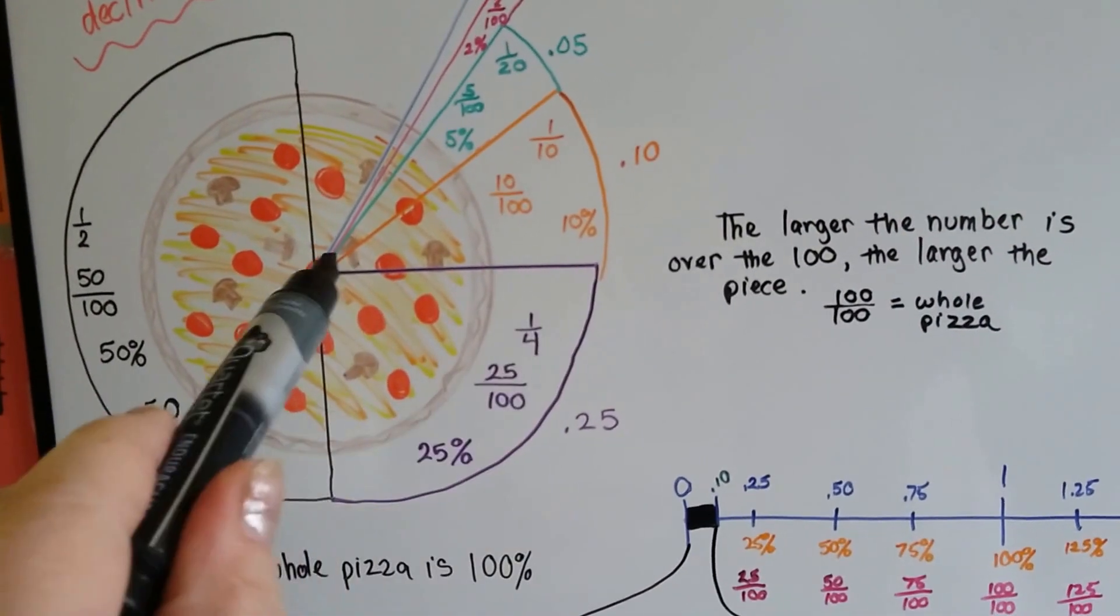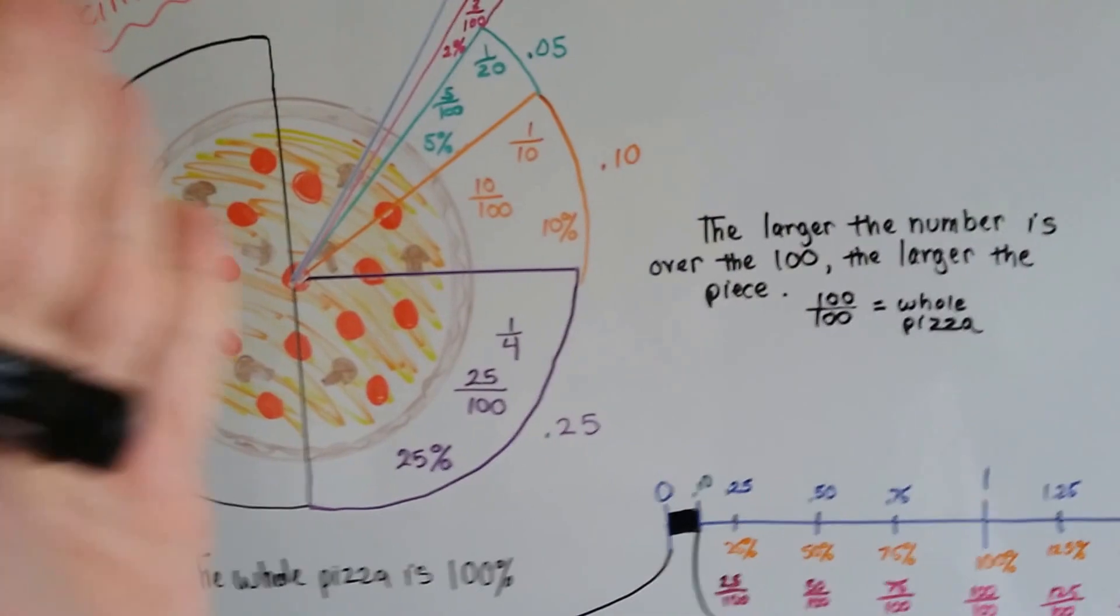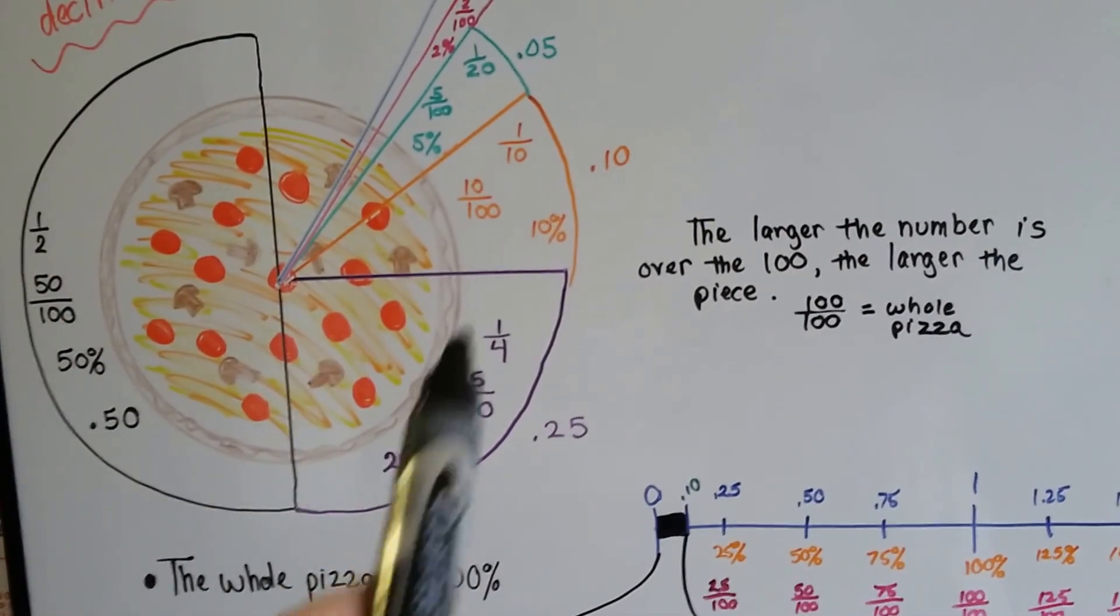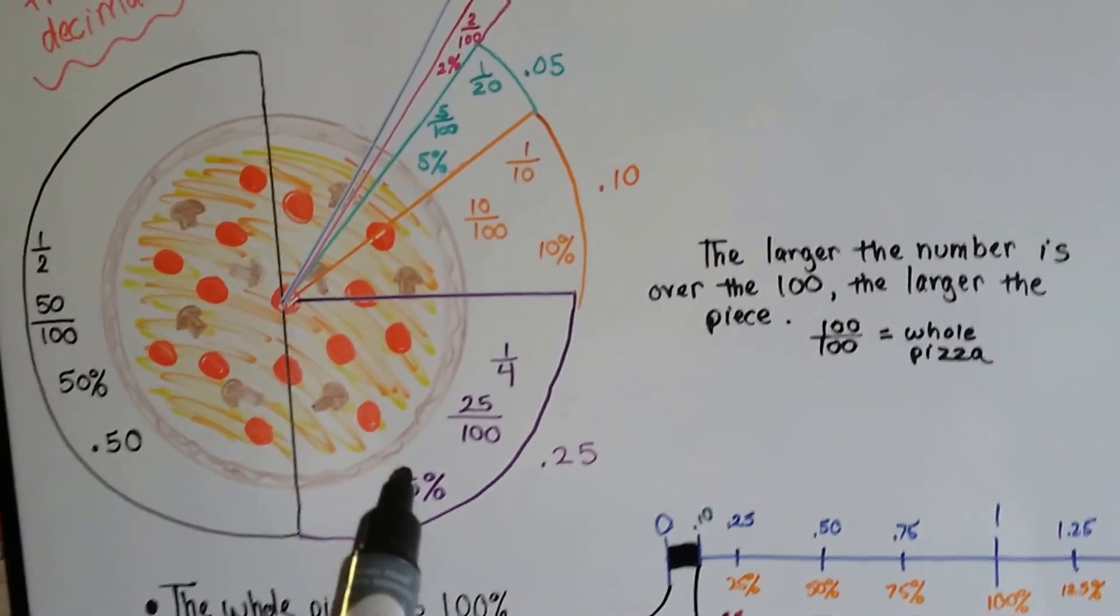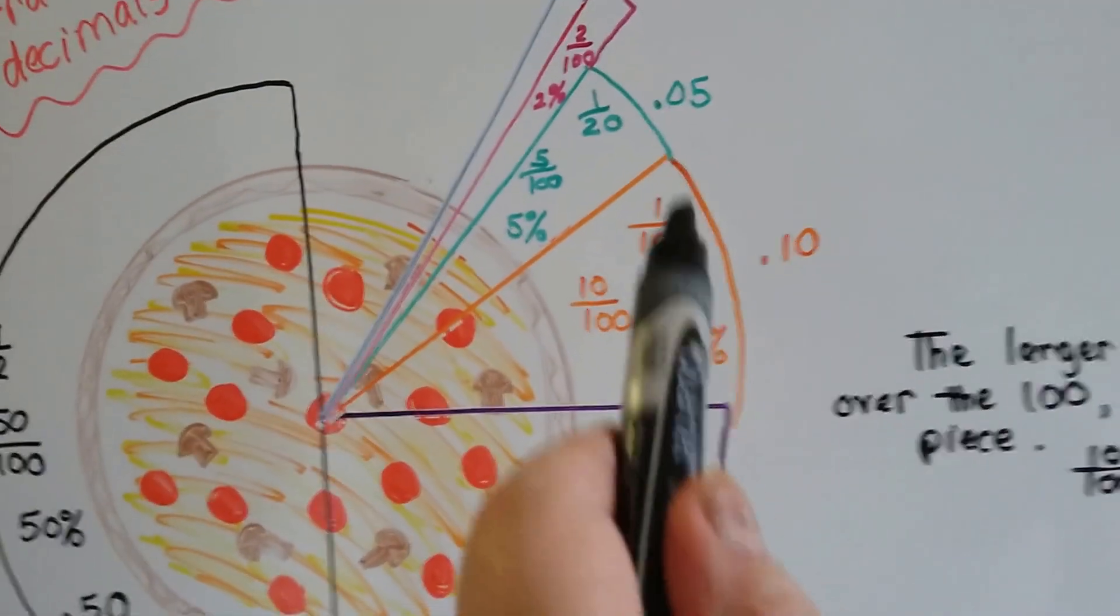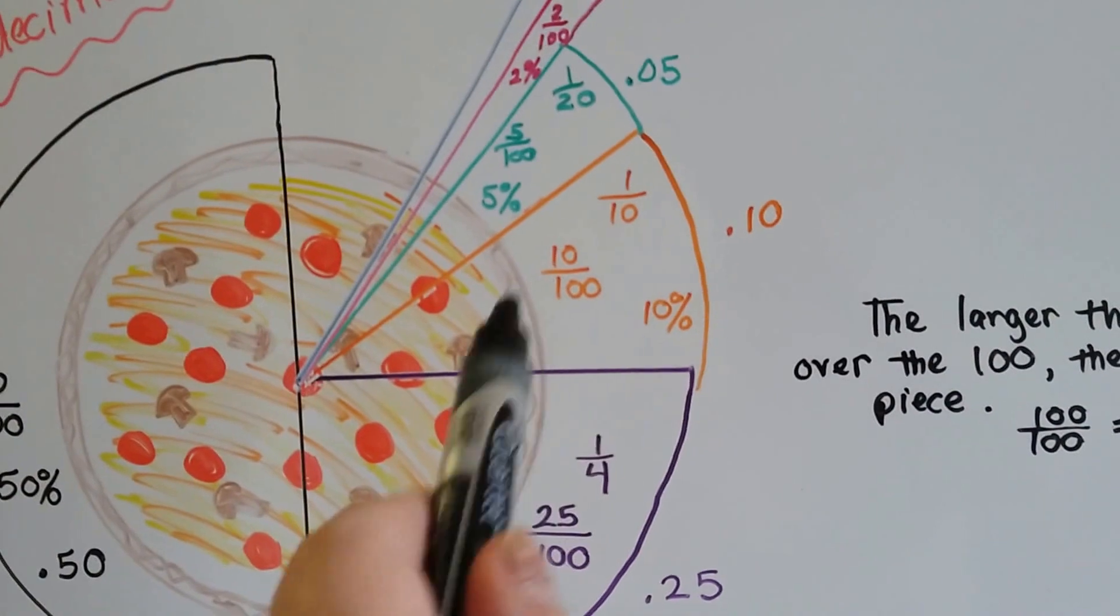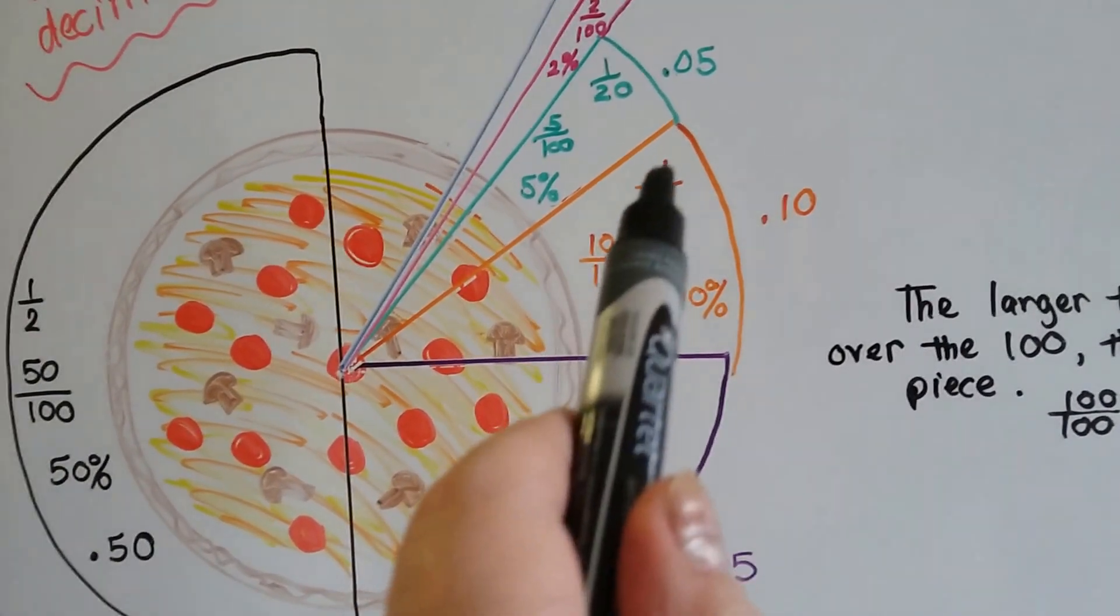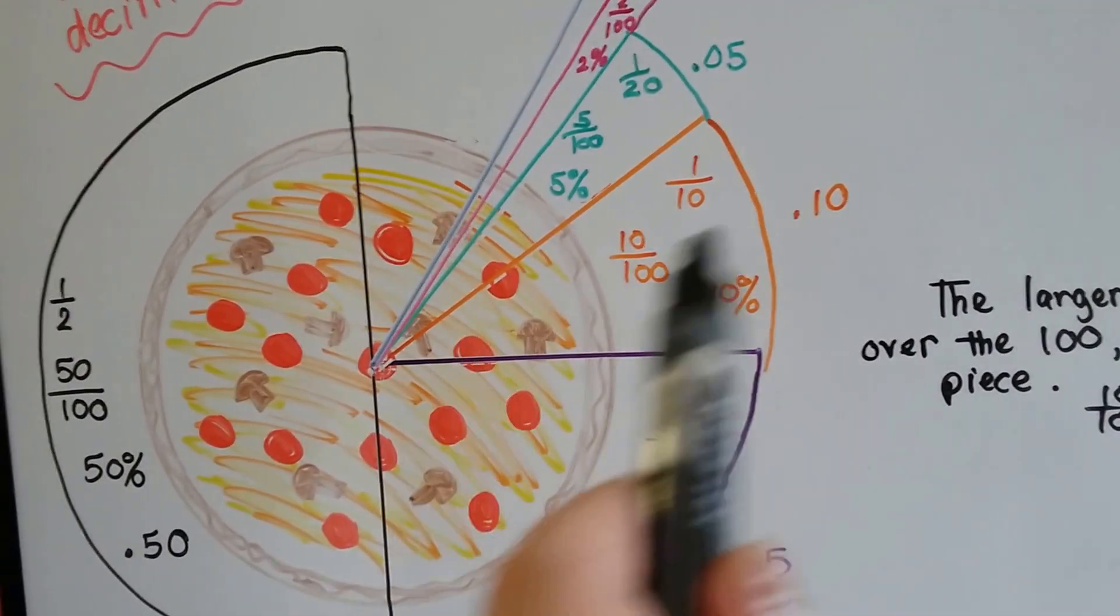From here to here is one-fourth of the pizza. If we were to have cut the pizza into fours, this would be one-fourth. 25 over 100 or 25 percent. This little piece is 10 percent. If the pizza was cut into pieces of 10, they'd all be this size. This is 10 one-hundredths, one-tenth, 10 percent, 10 hundredths of the pizza.